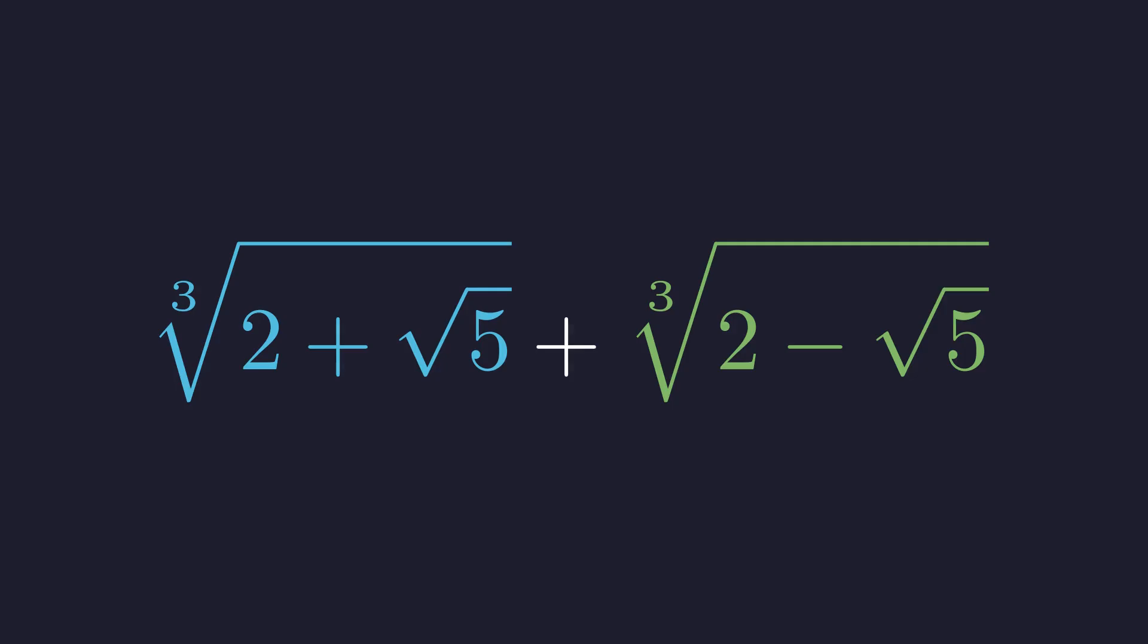Now take a moment to appreciate the symmetry here. Inside the cube roots we've got conjugates. Plus root 5 on one side minus root 5 on the other. Whenever you see this kind of structure, your mathematical senses should start tingling. This symmetry is going to be absolutely crucial.